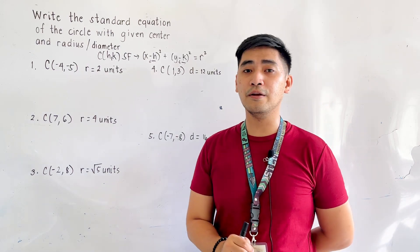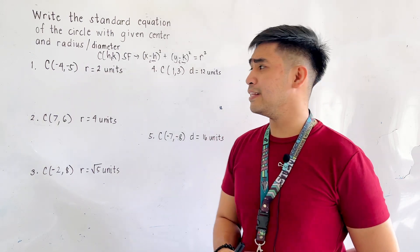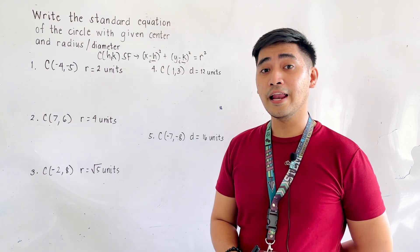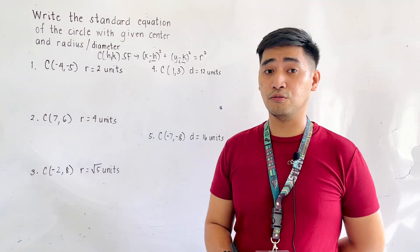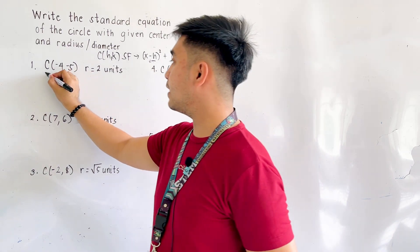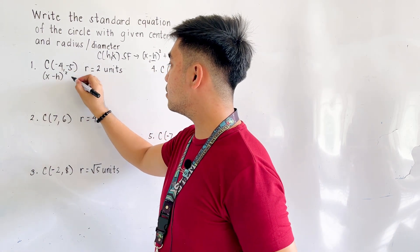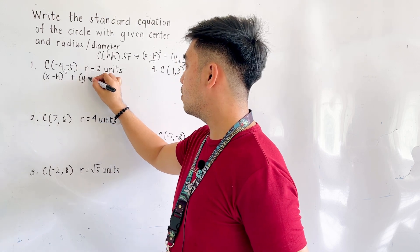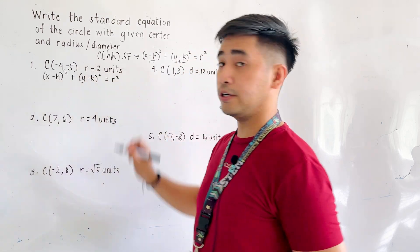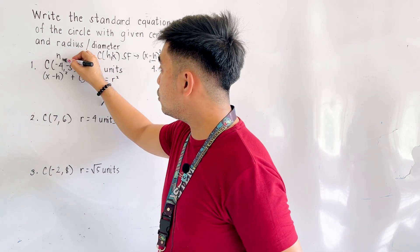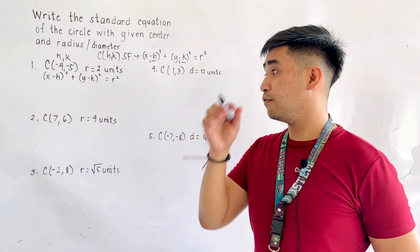For number 1, we are given the center located at (negative 4, negative 5), and the radius is equal to 2 units. Let us now write the standard equation: x minus h, quantity squared, plus y minus k, quantity squared, is equal to r squared. Where (h, k) is (negative 4, negative 5).